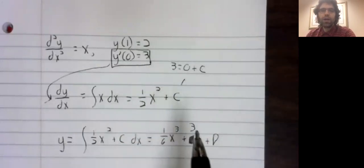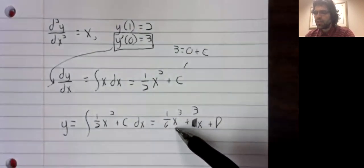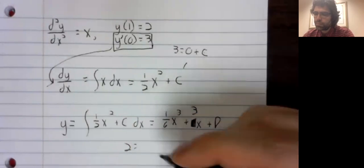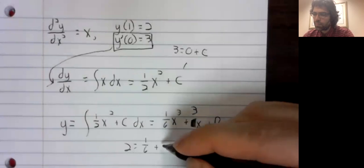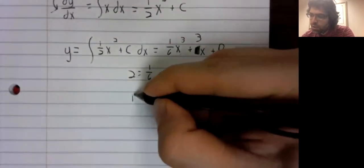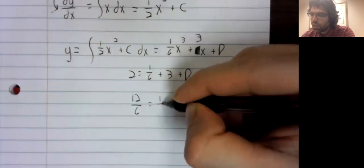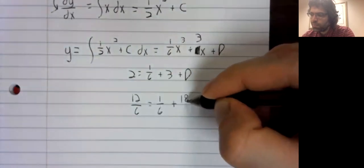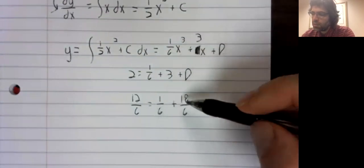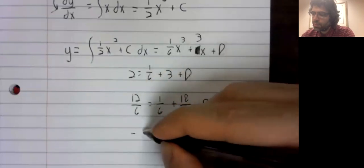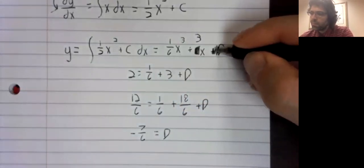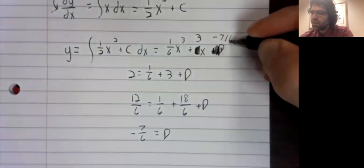y of 1 equals 2. When x equals 1, y equals 2. I suppose we now need a common denominator. And we find that d is negative 7 over 6.